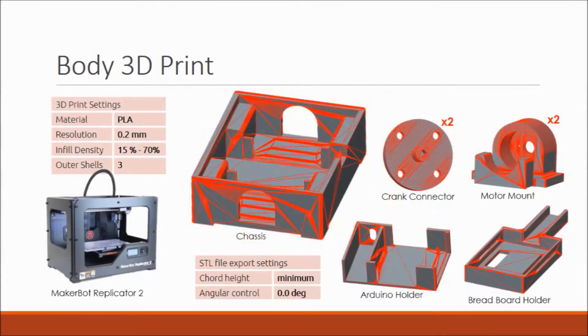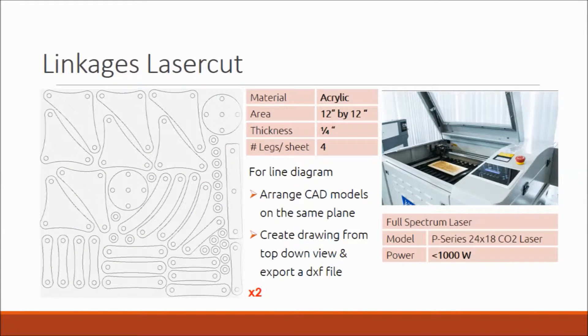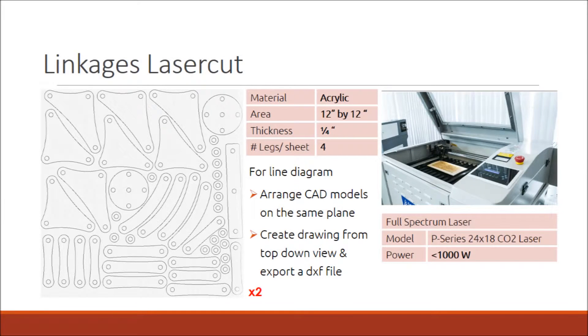The body parts were 3D printed from the STL files of the CAD using a replicator. 2D print densities of up to 70% were used for the dynamic load-bearing parts. The leg linkages were laser cut from two sheets of acrylic a quarter-inch thick. A full-spectrum laser cutter of 1,000 watts was used. The line diagrams for the cut were generated from the CAD model.